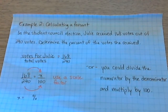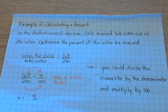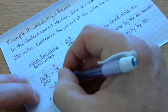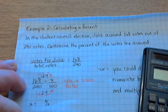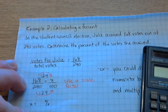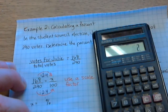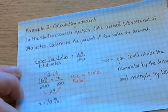In a student council election, Julie receives 168 out of 240 votes. We're going to determine the percent of the votes that she receives. I'll show you two different ways. This way should look familiar — it's a proportion using fractions, like we used in our ratio and rate unit. The goal is to get from 240 to 100. The scale factor we're going to use is divide by 2.4. So 240 divided by 2.4 is 100, and 168 divided by 2.4 is 70. That means 70 out of 100 — that's 70 percent. She got 70 percent of the vote.